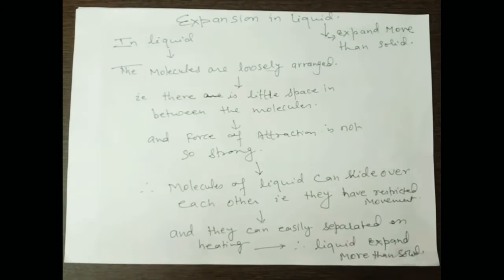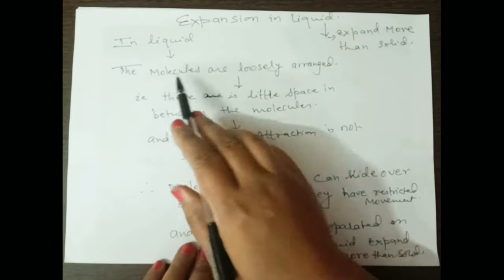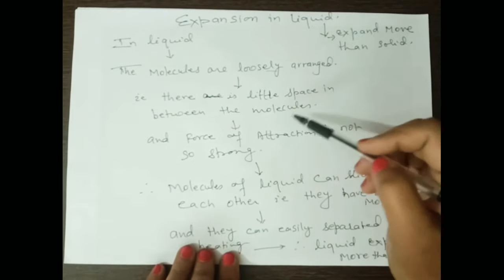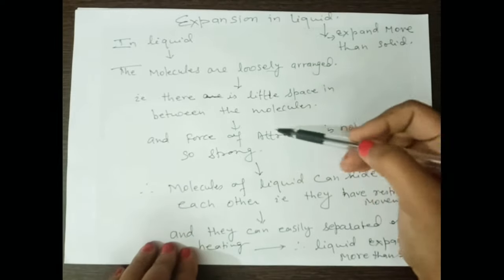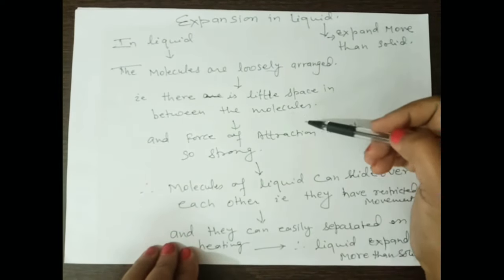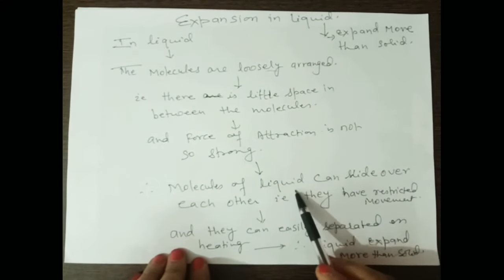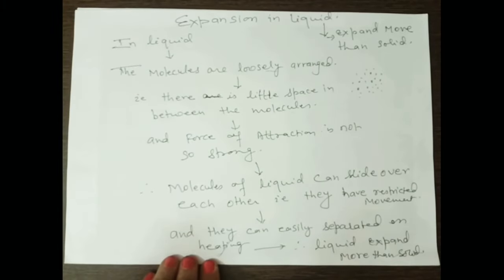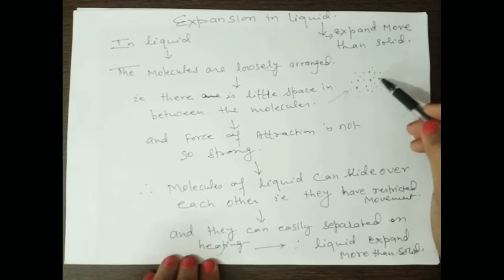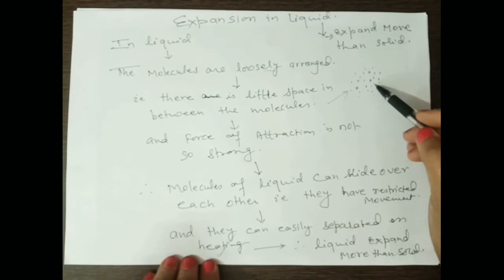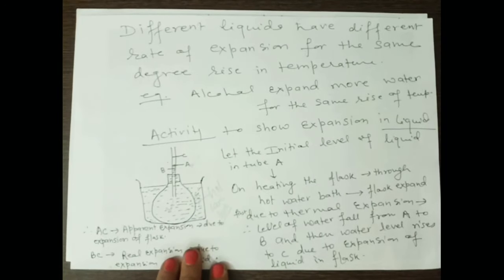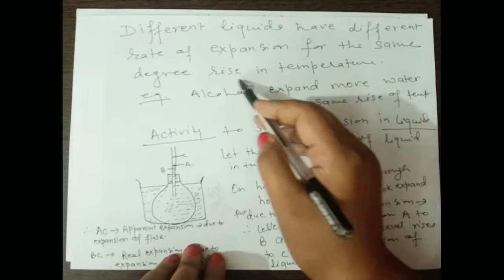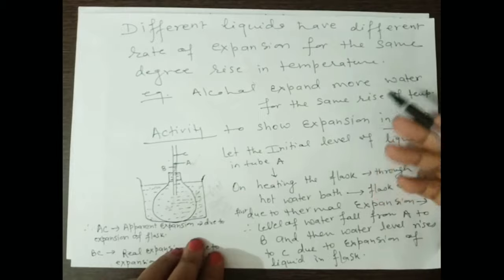In a liquid, molecules are loosely arranged with little space between them, so the intermolecular force of attraction is less strong than in a solid. Molecules of liquid have restricted movement and can slide over each other. When heated, the particles move at very high speed, create more space between them, and expand more than a solid. Different liquids have different rates of expansion for the same degree of temperature rise — for example, alcohol expands more than water, and water expands more than mercury.